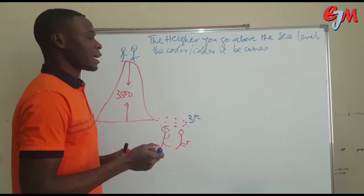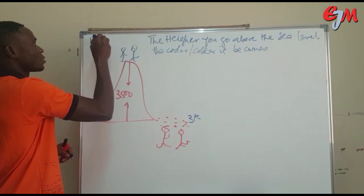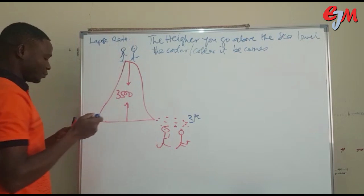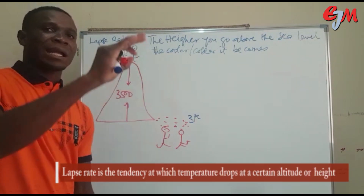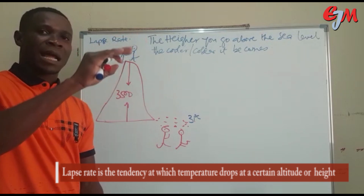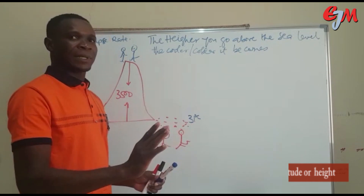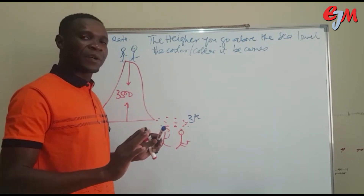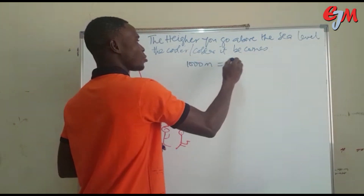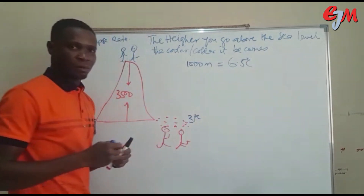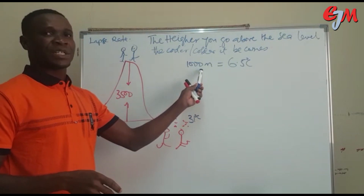Before we go further, note that there is something called lapse rate. Lapse rate is the tendency for temperature to drop at a certain altitude or height. It has a particular standard: for normal atmospheric temperature, at every 1,000 meters, temperature drops by 6.5 degrees Celsius.